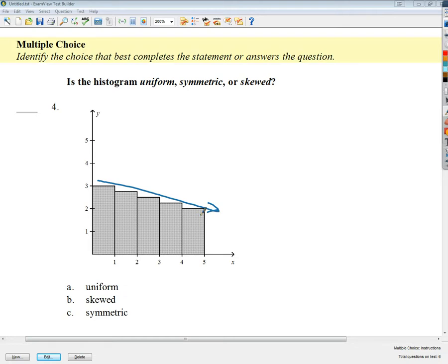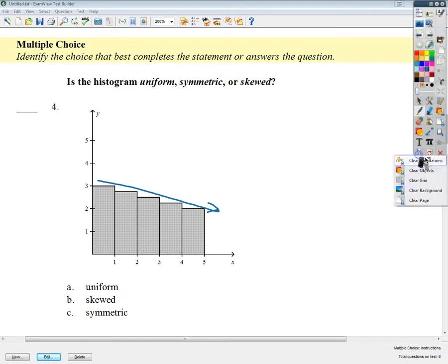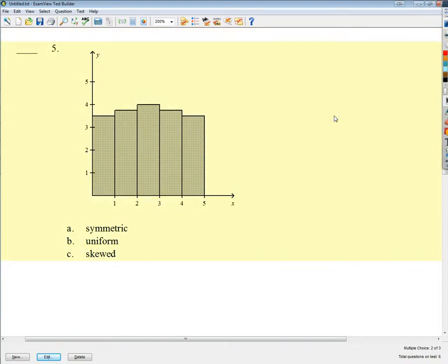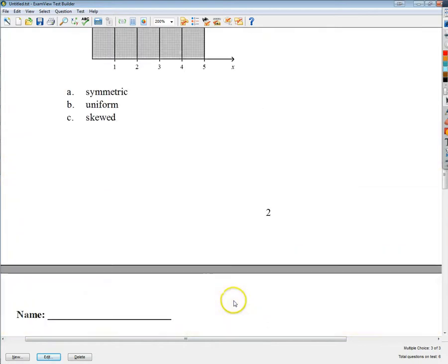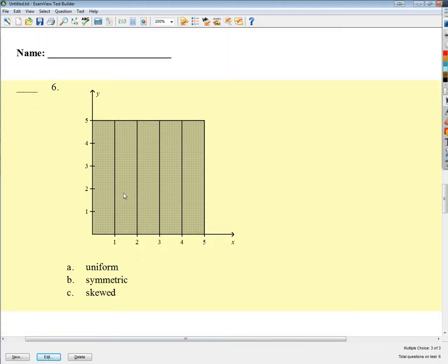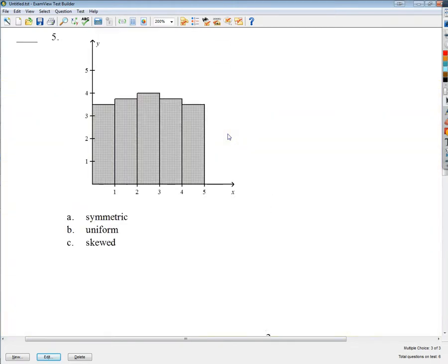And for number five, which is another type, this is a perfect example, or not a perfect example, but a very good example of a uniform histogram. This is a perfect example of a uniform histogram. I'm sorry, I'm looking at another thing while I'm doing this. My apologies. I've been doing this a long time today. Anyway, the uniform amount, because it's the same. You wear a uniform. It looks exactly the same as everybody else's. So that's now it's uniform.